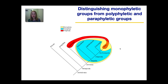This next picture shows a visual summary of what we just discussed. In yellow, we have a monophyletic group — it includes the ancestor and all of its descendants. In blue is a paraphyletic group, which has the ancestor and some, but not all, of its descendants. And in red, we have a polyphyletic group, which includes species that came from different ancestors and fails to include many other species that also came from those ancestors.